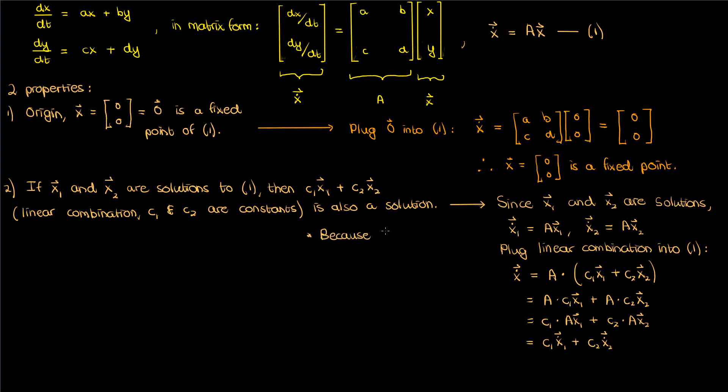And because the derivative is also a linear operator, whereby the derivative of a constant times a function is the constant times the derivative, and the derivative of the sum of two functions is the sum of the derivatives, this expression on the right can be expressed as the derivative of the original linear combination function. So that means that the linear combination of the solutions x1 and x2 also satisfies the equation for our dynamical system, which basically confirms property 2.